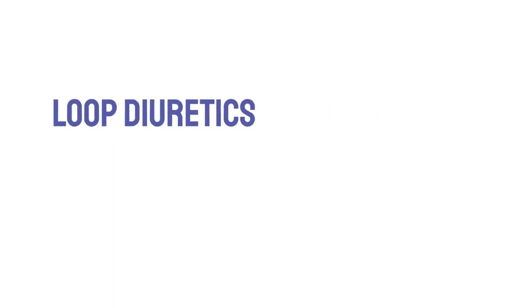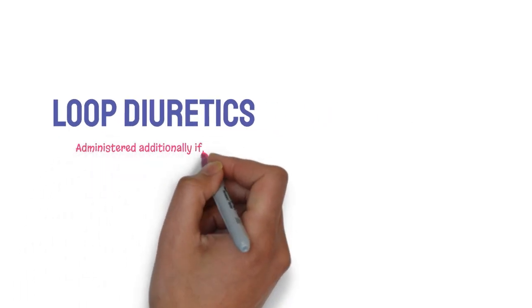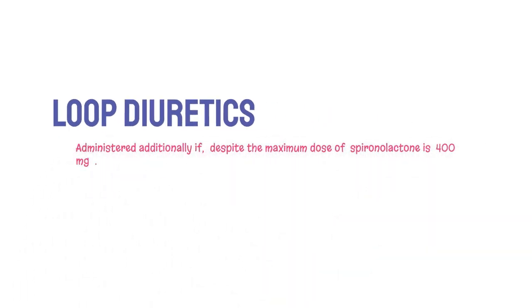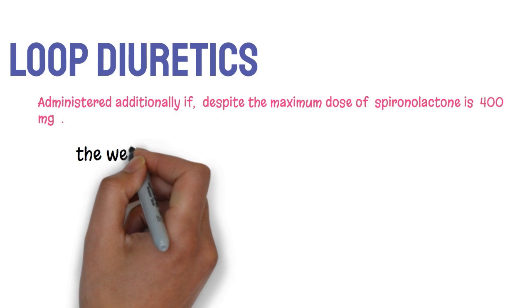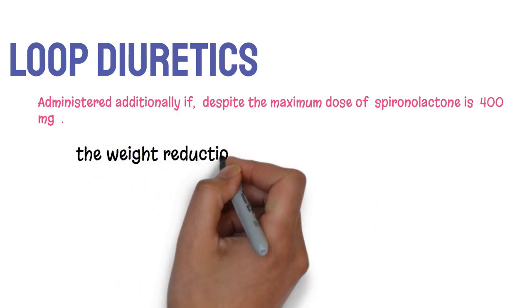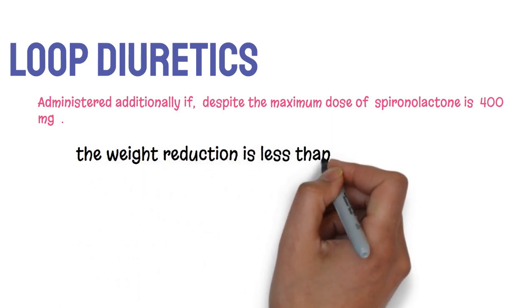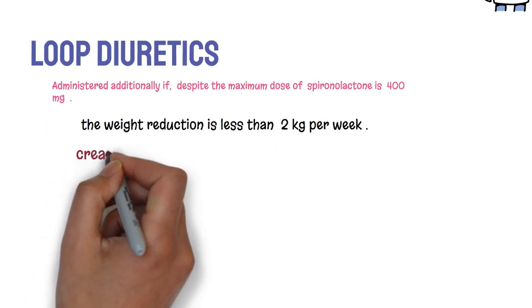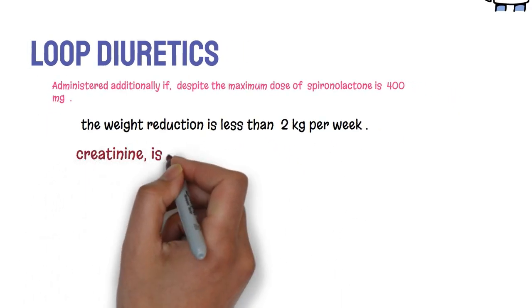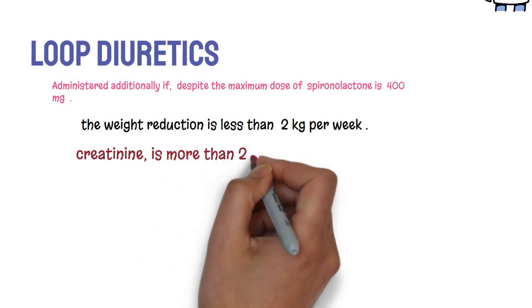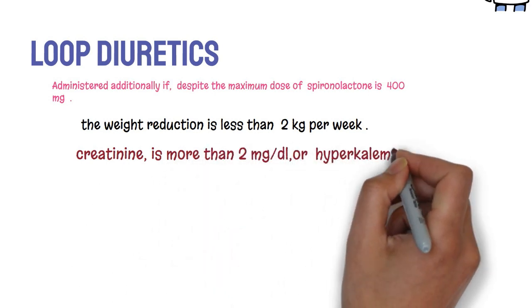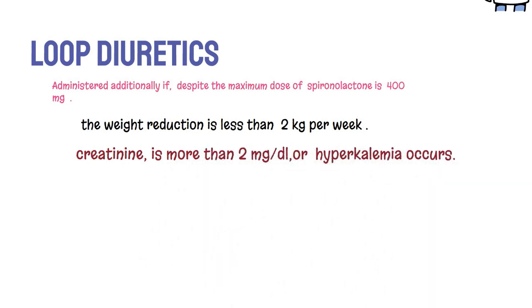Loop diuretics should be administered additionally if, despite the maximum dose of spironolactone at 400 mg, the weight reduction is less than 2 kg per week and creatinine is more than 2 mg per deciliter, or if hyperkalemia occurs.